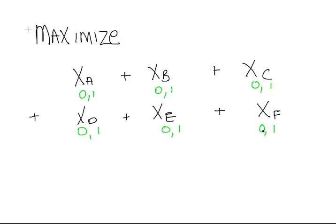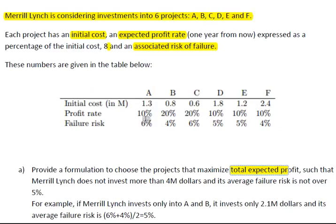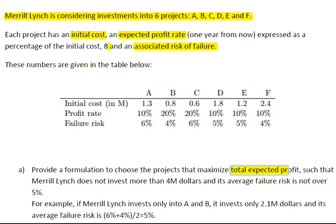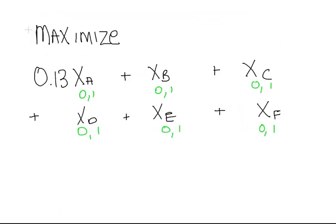So what we have to do is maximize the profit. What is the profit of each? Well, in the first case it's going to be 10% of 1.3, so that's 0.13xa. The next one is 0.8, 20% of 0.8 is 0.16.